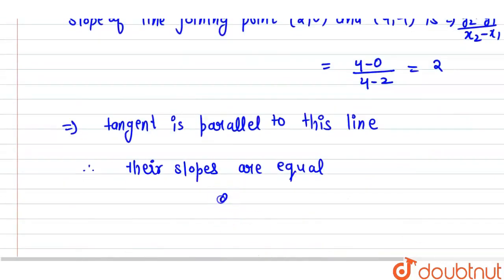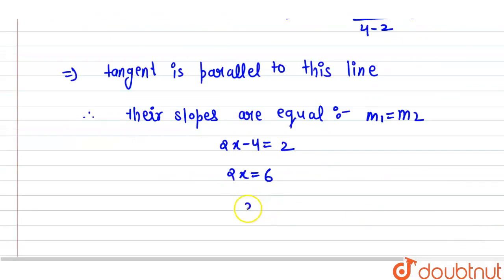So here the slopes are equal: 2x minus 4 equals 2. Therefore, 2x equals 4 plus 2 equals 6, so x equals 3.